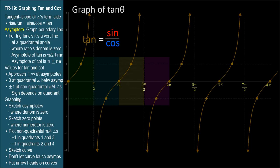Two important points. When you draw the tangent curve, don't let it touch an asymptote. And at the top and bottom edges of your graph, include an arrowhead on the ends of your curves to let your instructor know that you know the curves extend towards infinity.